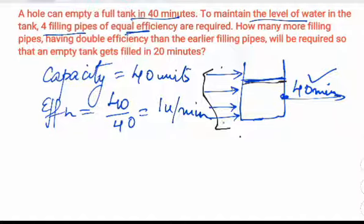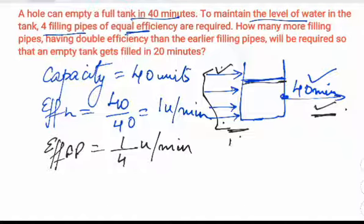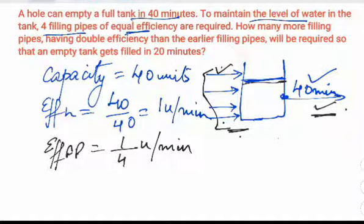The efficiency of all four filling pipes combined is equal to the efficiency of the drainage pipe. So the efficiency of one filling pipe is one-fourth of 1 unit per minute, that is 1/4 unit per minute. When all four are combined, their total is 1 unit per minute, which equals the drainage — so the level is maintained.